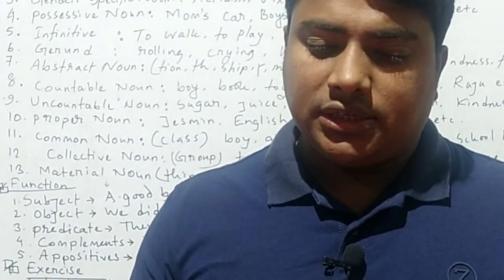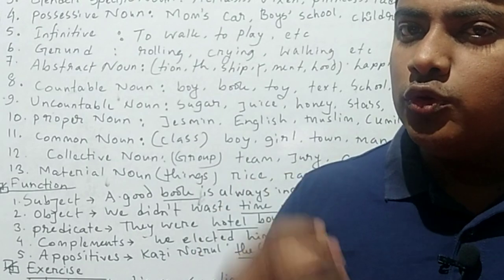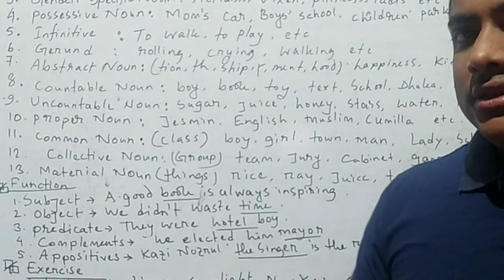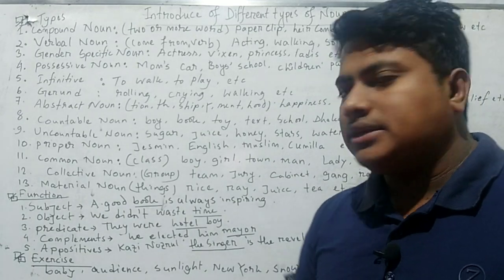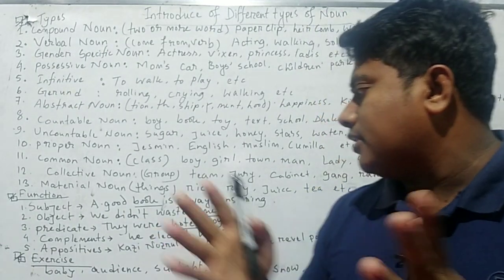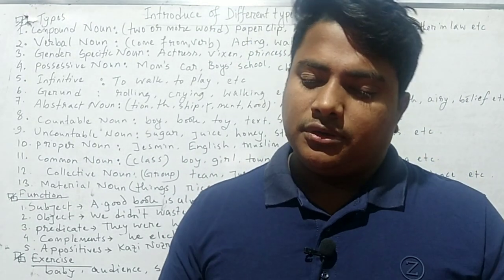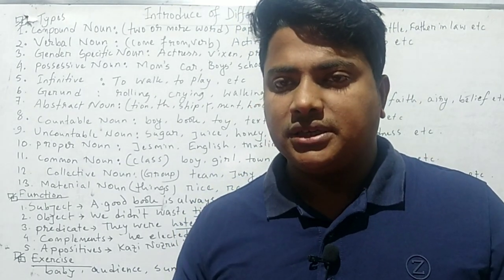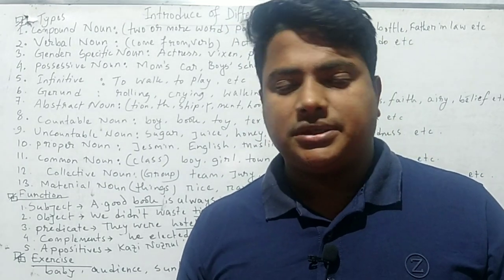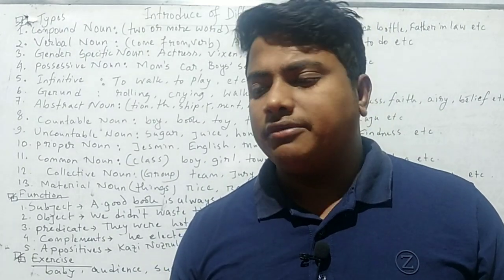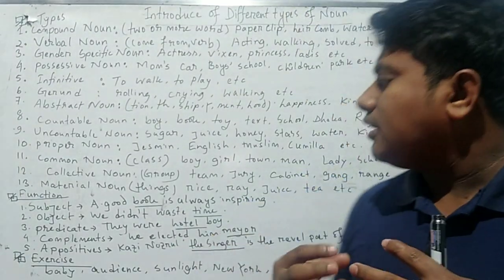We are also very familiar with collective nouns. A collective noun expresses a combined group of things or persons — for example, 'team.' A team may be made of three, four, five, ten, or eleven persons. 'Jury' is also a collective noun, as is 'cabinet.' In our country there are 25 or more cabinet members in Parliament, so it expresses a unit or group.